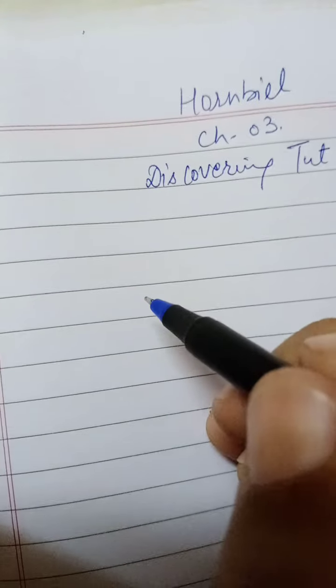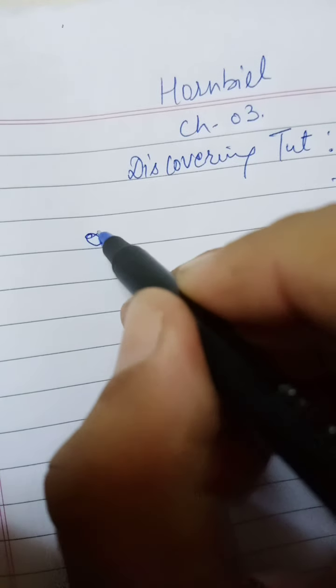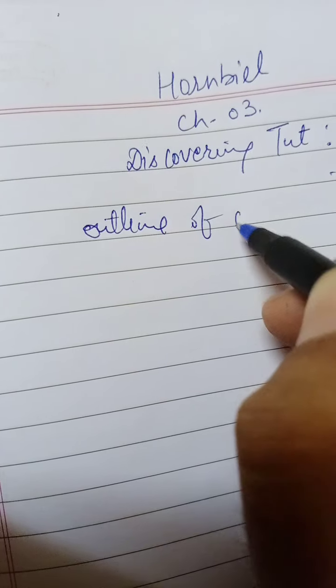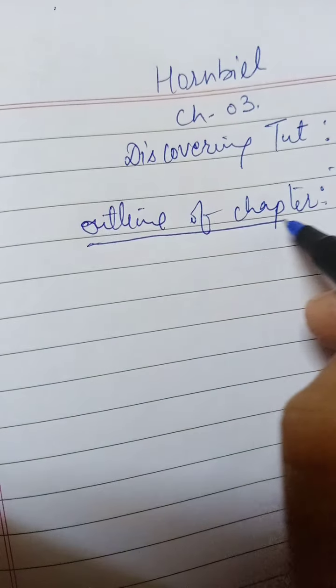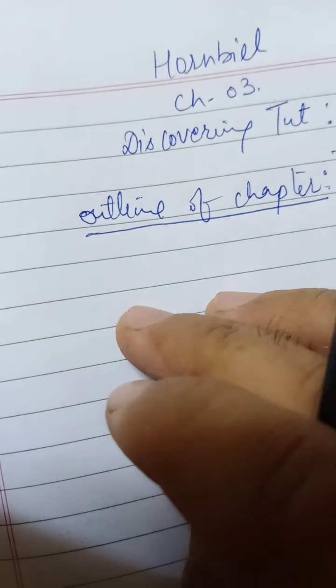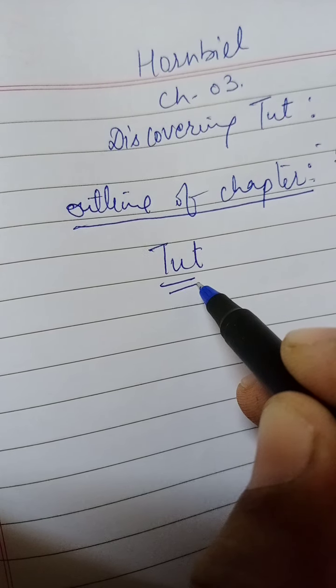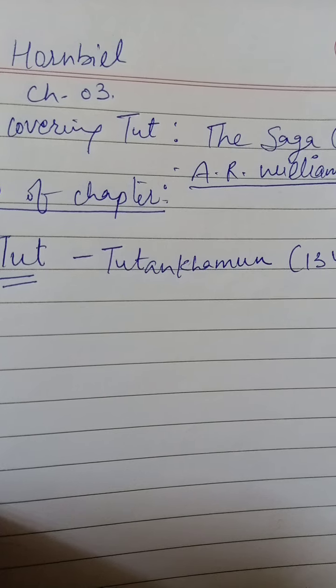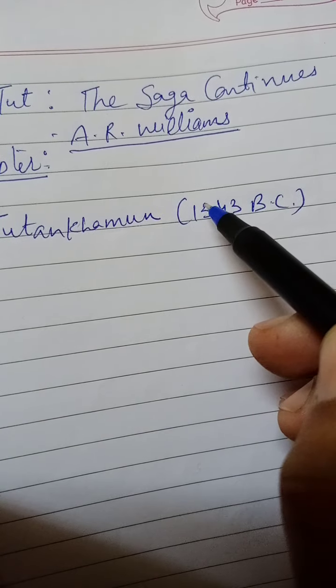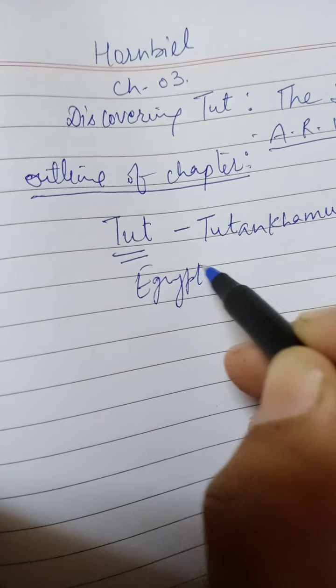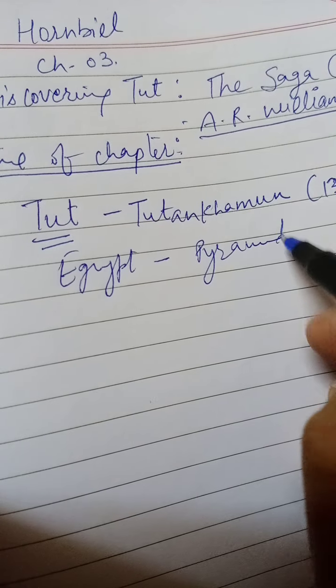First of all, we discuss about the outline of the chapter — what the chapter is all about. If I talk about the character, we have only one character, Tut. His complete name was Tutankhamun, 1343 BC. We know it very well that Egypt is most commonly famous for pyramids and mummies.